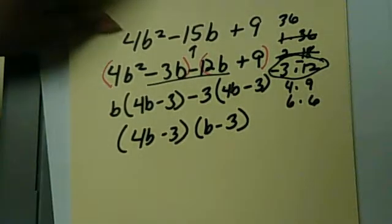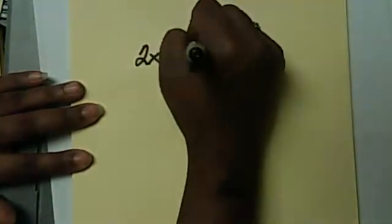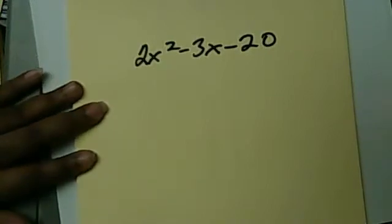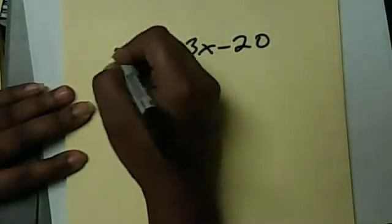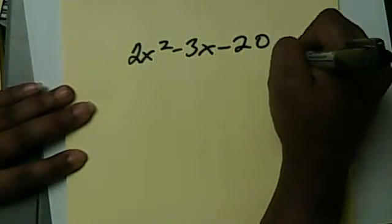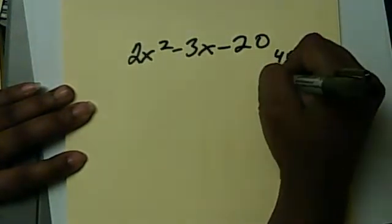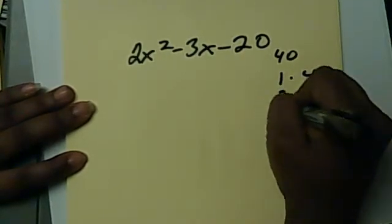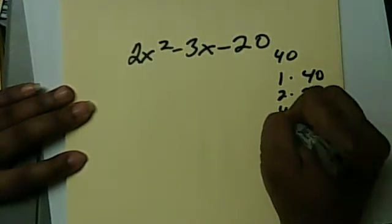One more. This last problem that we had was 2X squared minus 3X minus 20. Again, we're going to multiply A times C and we're going to get ourselves 40. 40 breaks down into 1 times 40, 2 times 20, 4 times 10, and 5 times 8.